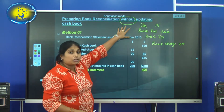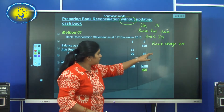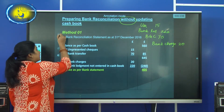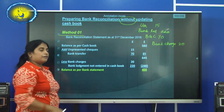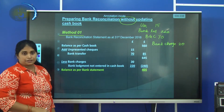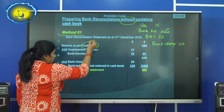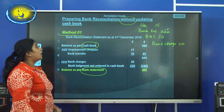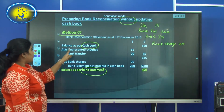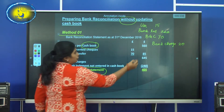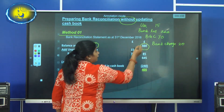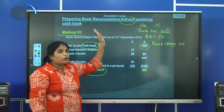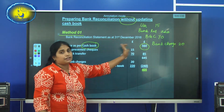Without updating the cash book means all four reasons should be included when making the bank reconciliation statement. There are two sub-methods: you can start with the cash book balance and end with the bank statement balance. The cash book closing balance was 560, so you take that closing balance — not any other amount — which gives you 560.